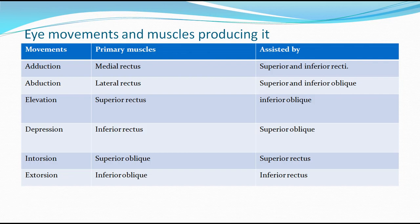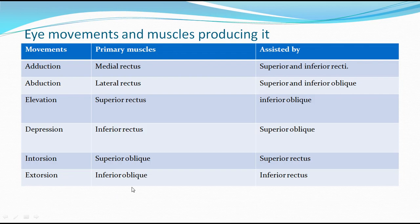The eyeball has various movements. Looking at the ceiling is elevation, brought about by superior rectus. Looking at the floor is depression, brought about by inferior rectus. Moving the eye sideways away from midline is abduction by lateral rectus. Moving towards the nose is adduction by medial rectus. Superior oblique causes intorsion - the eyeball moves downwards, forwards, and medially. Inferior oblique causes extorsion.